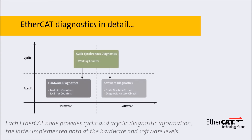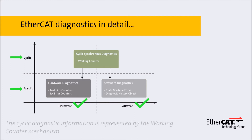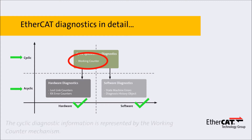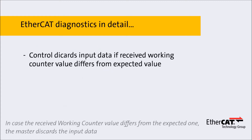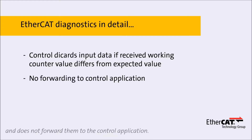Each EtherCAT node provides cyclic and acyclic diagnostic information, the latter implemented both at the hardware and software levels. The cyclic diagnostic information is represented by the working counter mechanism. In case the received working counter value differs from the expected one, the master discards the input data and does not forward them to the control application.